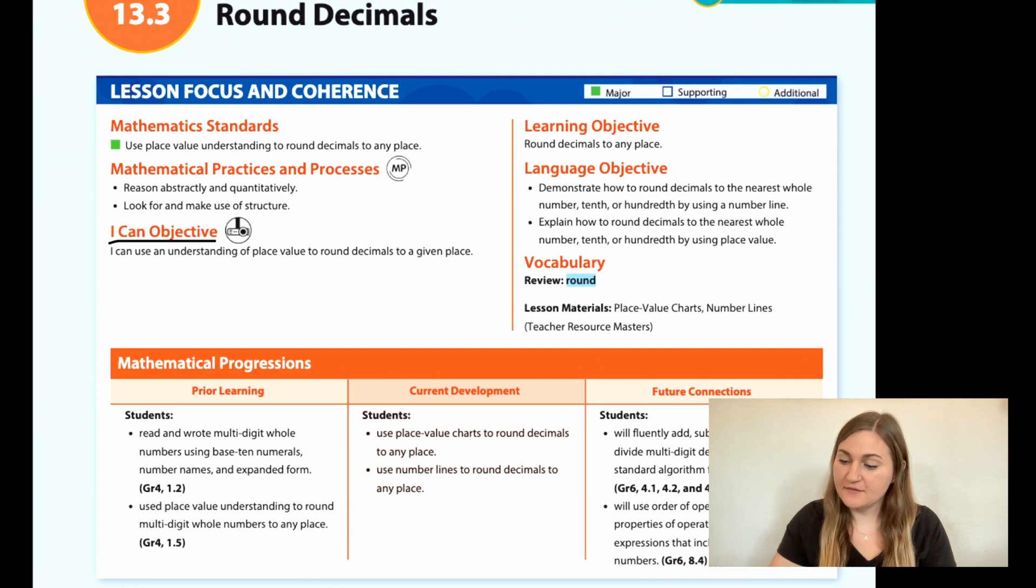Hi, I'm Natalie Rhodes and this is IntoMaths 5th grade, module 13, lesson 3. I'm going to start off by going over the I can objective. It says I can use an understanding of place value to round decimals to a given place. And the learning objective is to round decimals to any place.